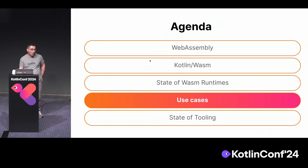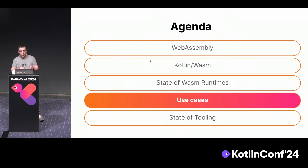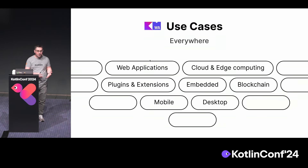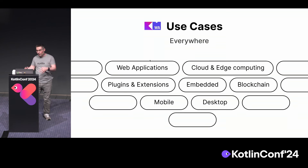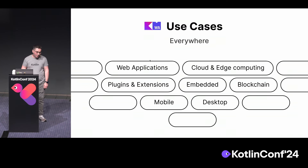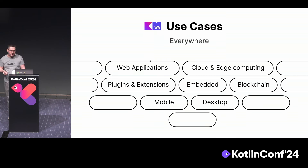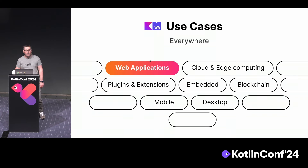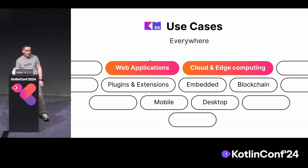So now we know more about Kotlin, WebAssembly, and Wasm runtimes — what can we do with all of them together? Let's look at some use cases. There are many places where WebAssembly is used today; we want to provide an ability to use Kotlin in any WebAssembly runtime. I think there are two main use cases where you get the most from the Kotlin and WebAssembly combo: developing web applications and cloud and edge computing.